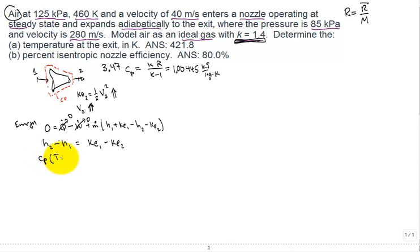You can replace the change in enthalpy by c sub p times T2 minus T1 equal to KE1 minus KE2. We can solve for T2: T2 is equal to T1 plus 1 over the specific heat constant pressure times KE1 minus KE2.